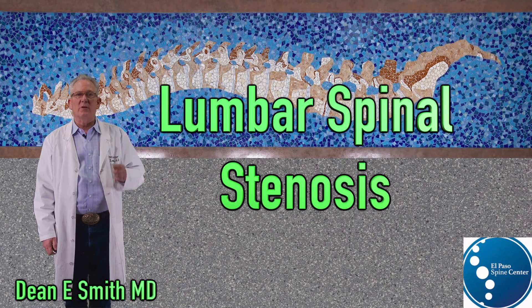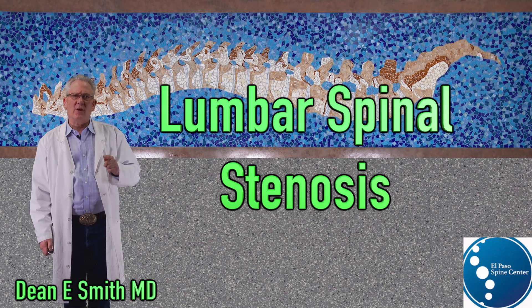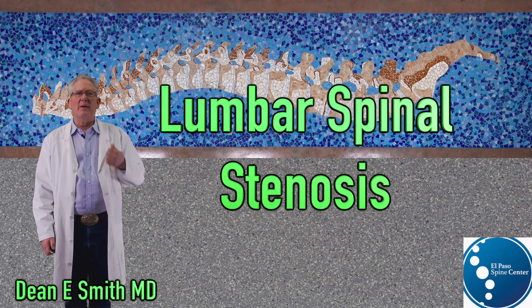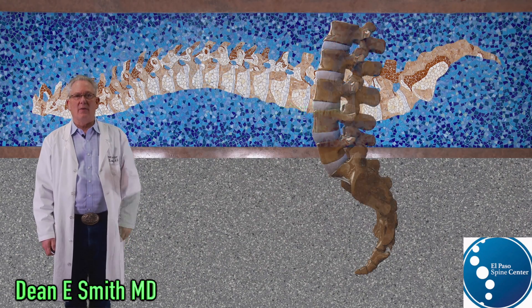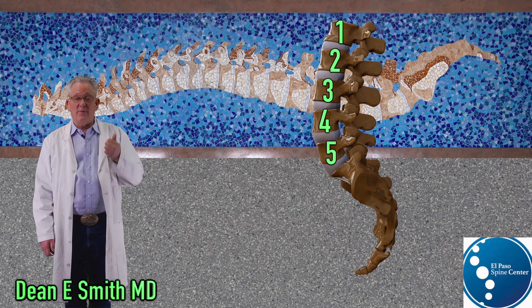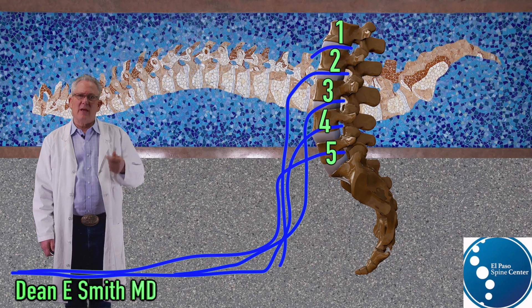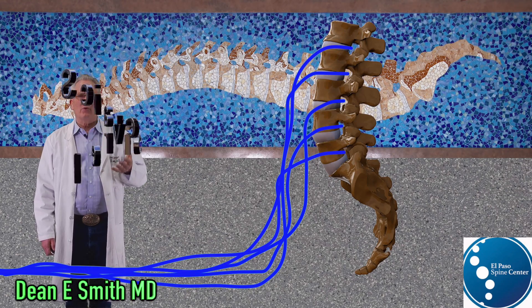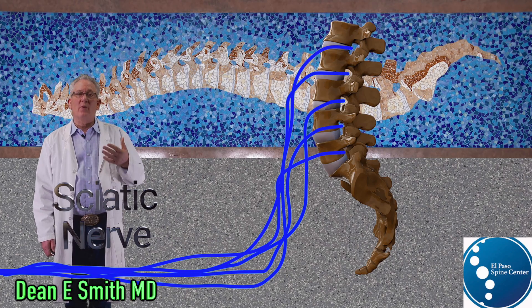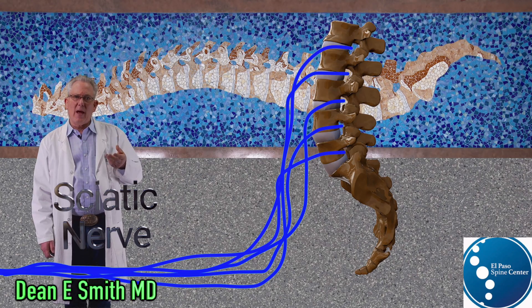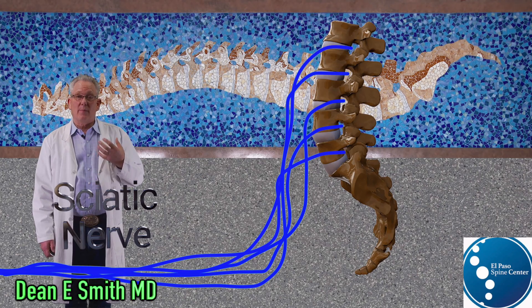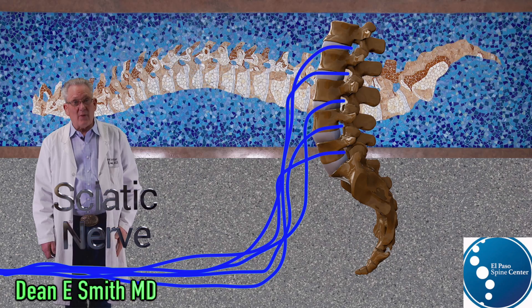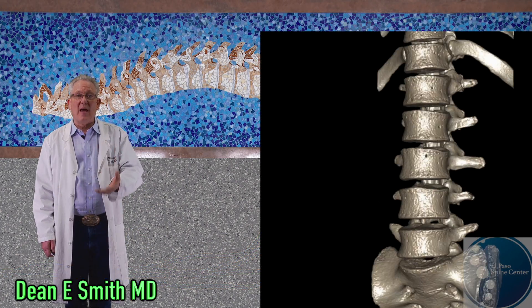Lumbar spinal stenosis is a degenerative condition characterized by narrowing of the lumbar spinal canal. The lumbar spine is composed of five vertebral bodies. Each of these bones are separated by a disc, and at each disc level a nerve exits, all of which join together in the buttock to form a larger nerve known as the sciatic nerve. Therefore, if a nerve is pinched in the lower back, it produces pain in the back, buttock, and down the leg, and this is known as sciatica.